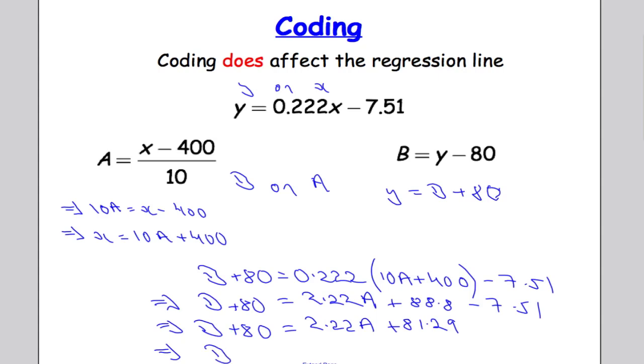B equals 2.22a plus 1.29 and that's the regression line of b on a.